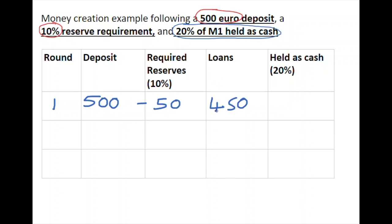However, from that €450 loan that is created, 20% is held out in the macro economy as cash, so only 80% of it goes back into the banking system. 20% of €450 is €90, so €90 is held as cash outside the system. That means it's the difference between the loan of €450 and the cash held of €90 that can go back into the banking system in round two.